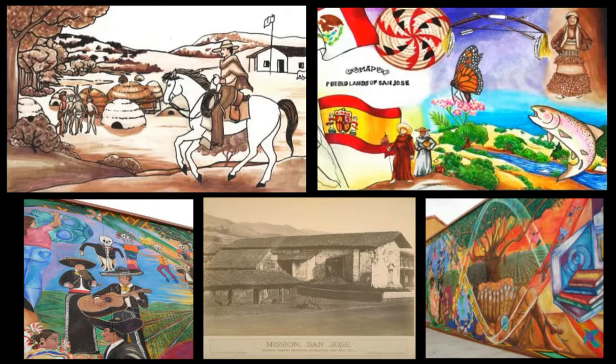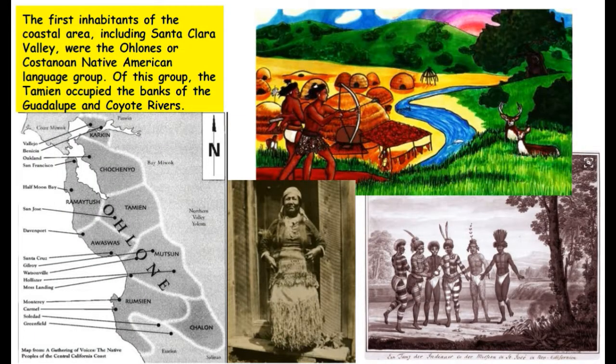Before we had any American settlers, San Jose and our whole area was Native Americans originally, and then Spanish and Mexican settlers. We were actually governed by Mexico — until 1850! And then in 1850 we got statehood, which means we became part of the United States. Did you guys know that San Jose was actually the original capital before Sacramento?